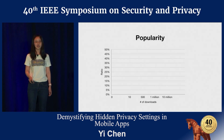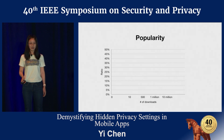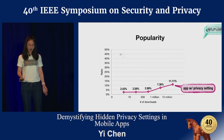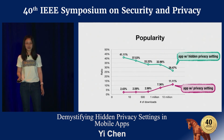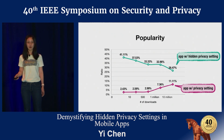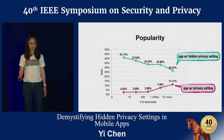We also studied the problem relative to app popularity. We found that apps with more downloads are more likely to have privacy settings. Meanwhile, the number of apps with hidden privacy settings also increased among popular apps. An educated guess is that developers of popular apps pay more attention to privacy settings and are more likely to make those settings more explicit.